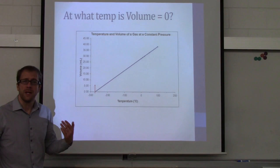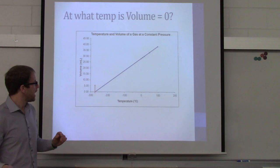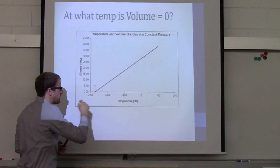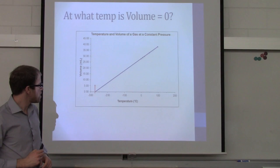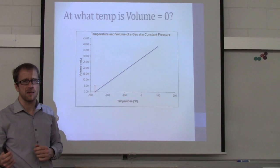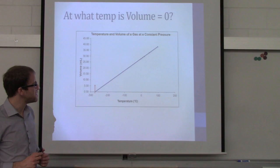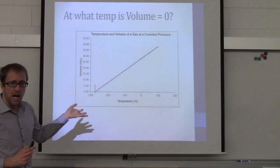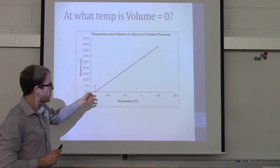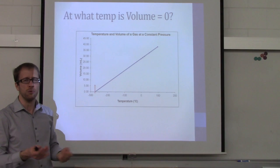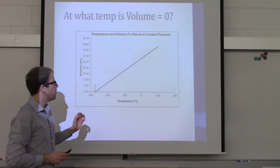Based on his measurements, Charles graphed them out and drew a line of best fit. That line extended all the way to the x-axis, and it intersected at exactly negative 273.15 degrees Celsius. He hypothesized that at this temperature, the volume of the gas should be zero — because the volume is decreasing as temperature decreases. Of course, we know you can't have zero volume when it comes to matter, since matter takes up space, but this was a very good approximation of something important.